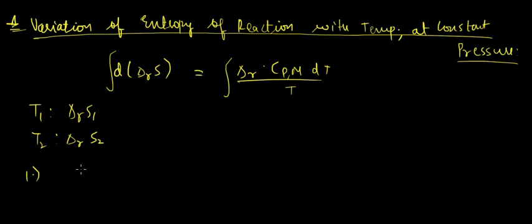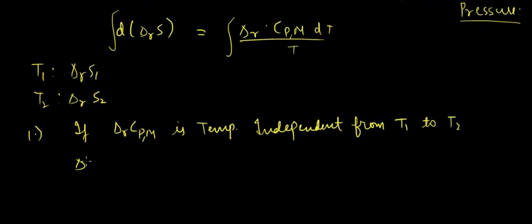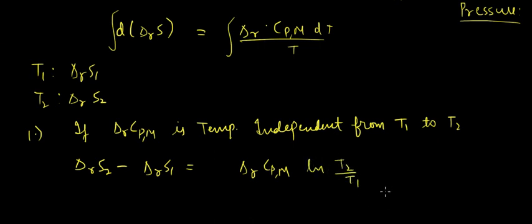First case: if ΔR Cpm is temperature independent from T1 to T2, then we can write ΔR S2 minus ΔR S1 equals ΔR Cpm times ln(T2/T1).